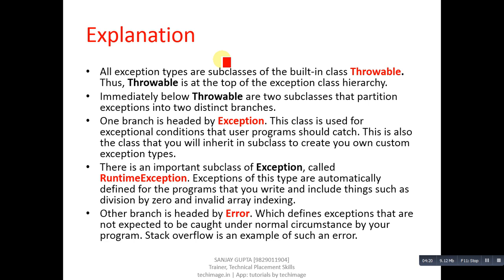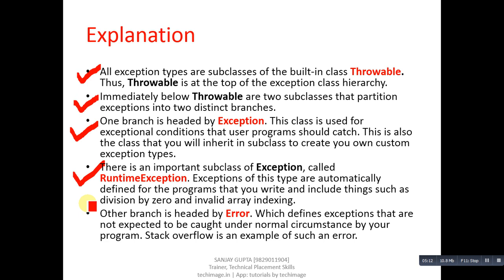All exception types are subclasses of the built-in class Throwable, which is at the top of the exception class hierarchy. Immediately below Throwable are two subclasses that partition exceptions into two distinct branches. One branch is headed by Exception, which is used for exceptional conditions that user programs should catch. This is also the class you will inherit to create your own custom exception types. There is an important subclass of Exception called RuntimeException — exceptions of this type are automatically defined for programs you write and include things such as division by zero and invalid array indexing.